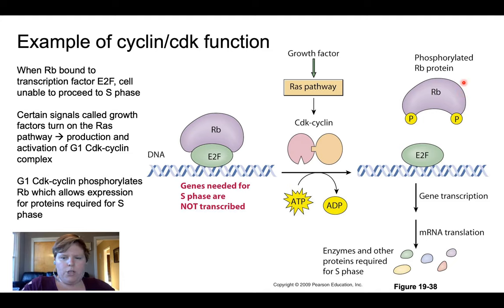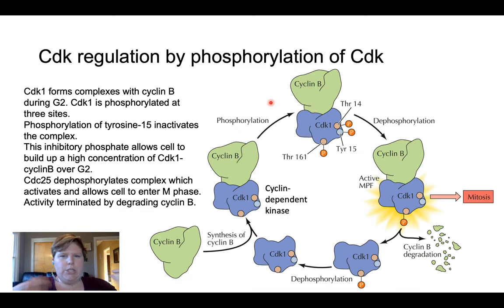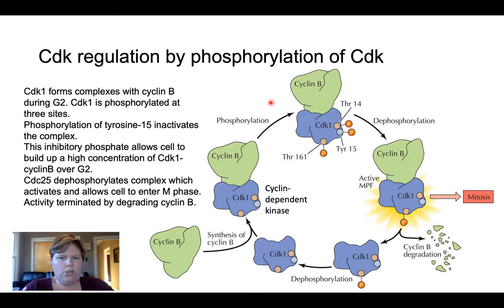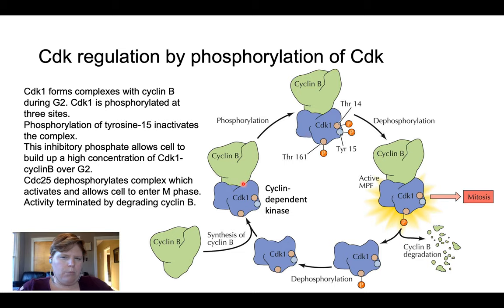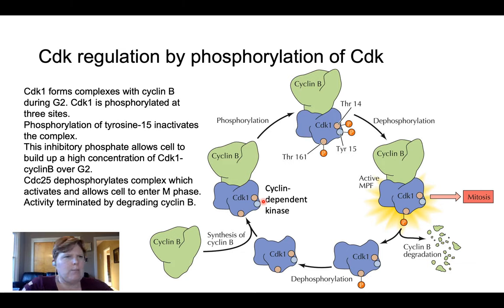Depending on which checkpoint, it's going to change which CDK-cyclin pair we're using. Certain cyclins don't work in isolation — over the course of their activation or deactivation, they're able to regulate other CDK proteins. In this specific example, we're looking at kinase CDK1 and how it interacts with a protein called cyclin B. For an overview of the different kinds of cyclins and CDKs, check out table 18-2 in the book.